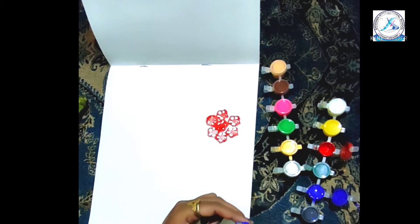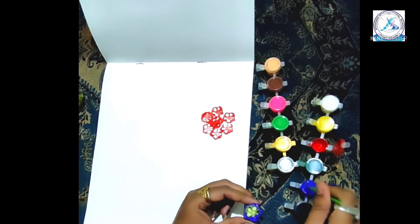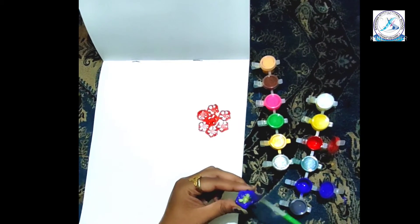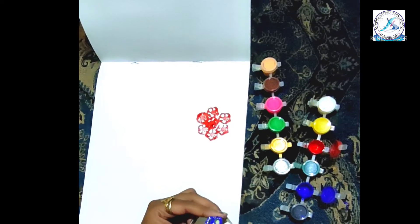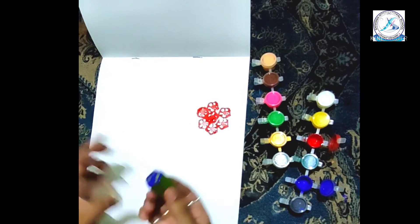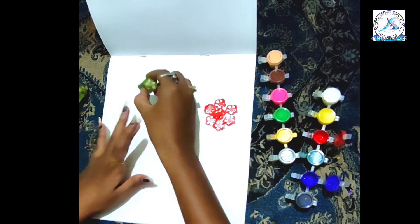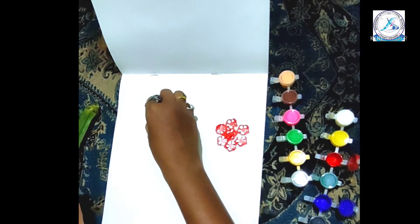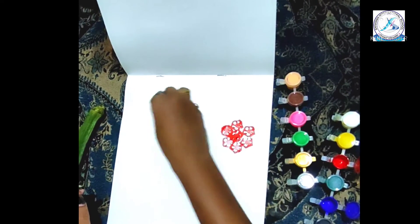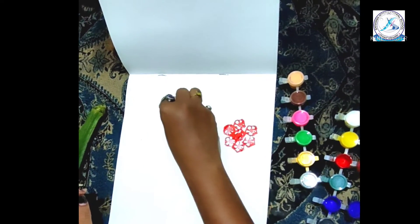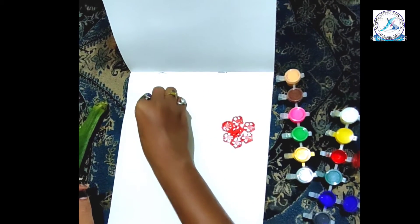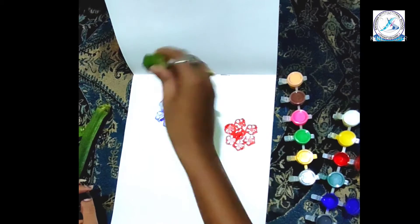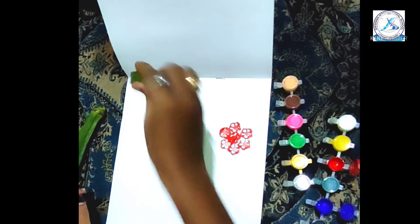If it is not dipping, you can take it with the help of brush like this. Then paint it like this. See our blue flower is ready.